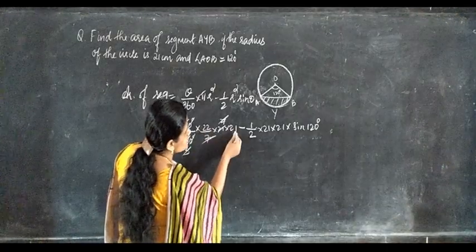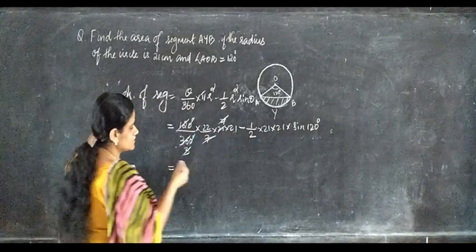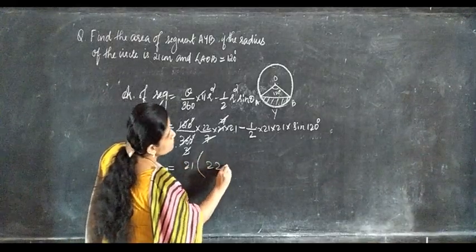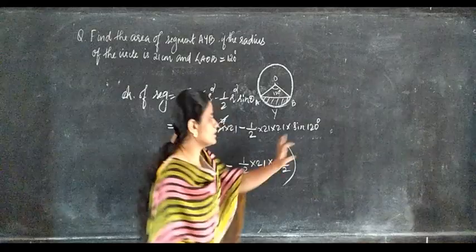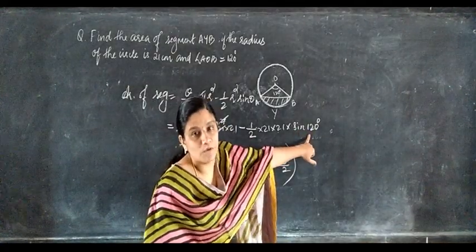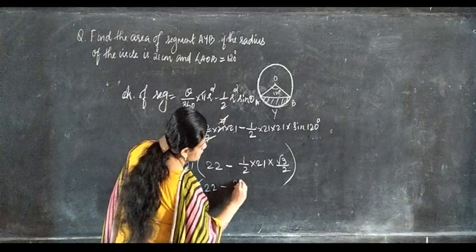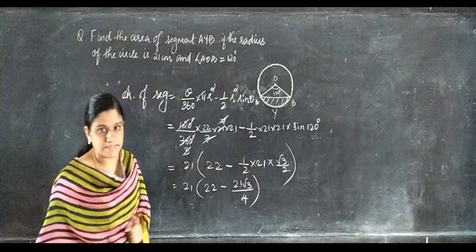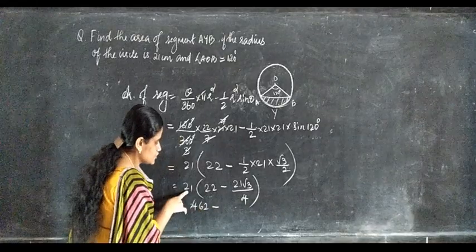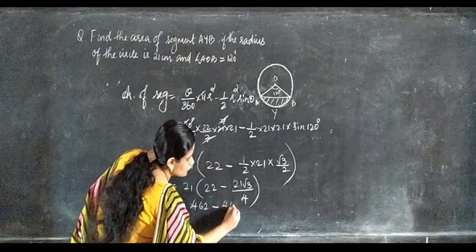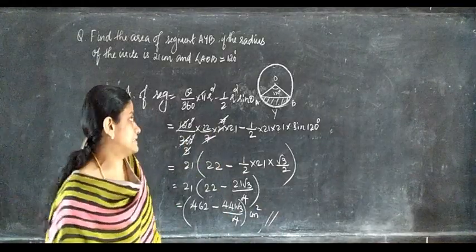Taking 21 outside: 21 into open bracket 22 minus half into 21 into root 3 by 2 close bracket, since sine 120 equals root 3 by 2. This gives 21 into open bracket 22 minus 21 root 3 by 4 close bracket, which equals 462 minus 441 root 3 by 4 centimeters square. This is the area of the segment.